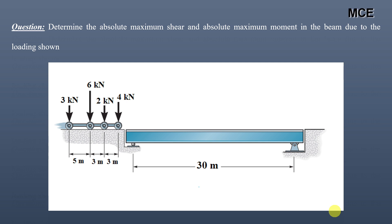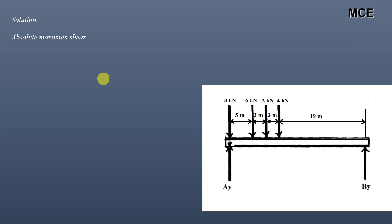Hello and welcome back to Master Civil Engineering. In the previous video we learned how to compute the maximum shear and moment at a specified point in a beam due to a series of concentrated moving loads. In this video we will learn how to determine both the location of the point in the beam and the position of the loading so that we can obtain the absolute maximum shear and moment caused by the loads. We have to determine the absolute maximum shear and absolute maximum moment in this simply supported beam of span 30 meters due to four concentrated loads with fixed spacing.